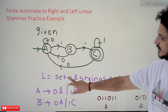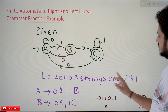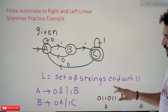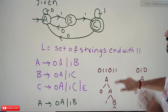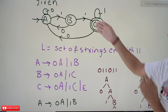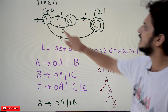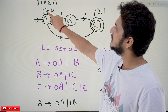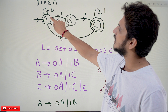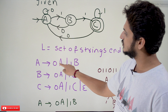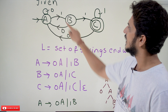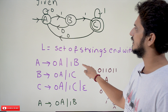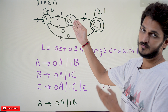Coming to today's example: this finite automata is going to accept the set of strings ending with one one — the last two characters should be one one. To write the right linear grammar, start from initial state A. On seeing input symbol zero we move to state A, so A → 0A. On seeing input symbol one we move to B, so A → 1B.